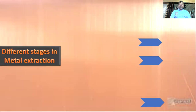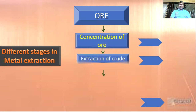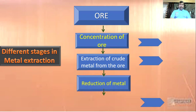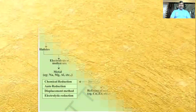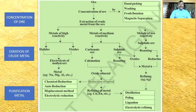Let us recall the classification of the different stages involved in metal extraction: from ore to concentration of the ore, then extraction of the metal, and finally refinement of the metal. Let us recapitulate the different processes involved in extraction and purification of the metal.